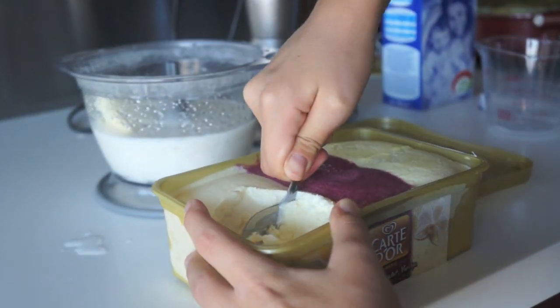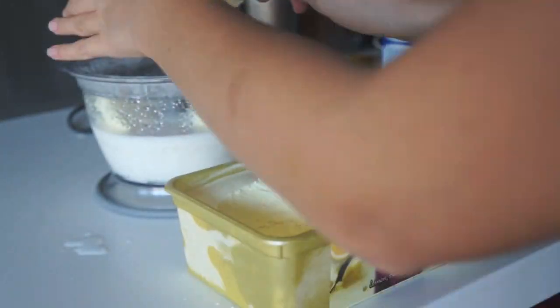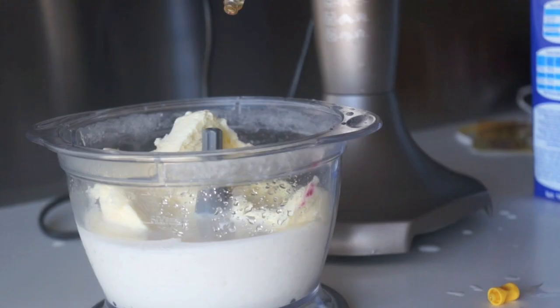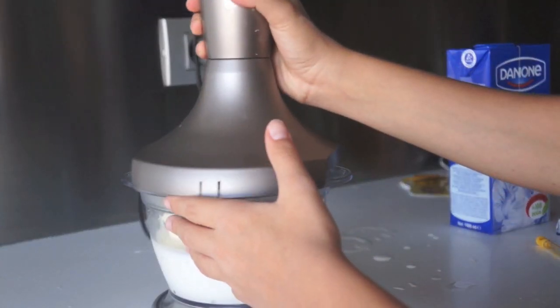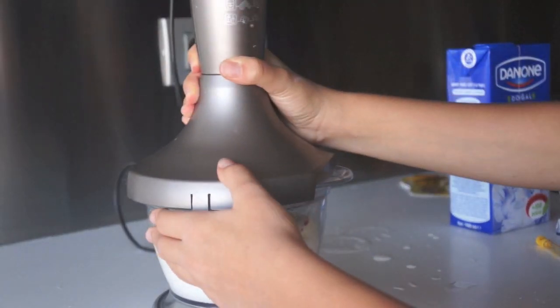And then I got three scoops of vanilla ice cream and I put that in the blender as well. I put one sugar cube and a few drops of vanilla extract and I mixed it all up in my blender.